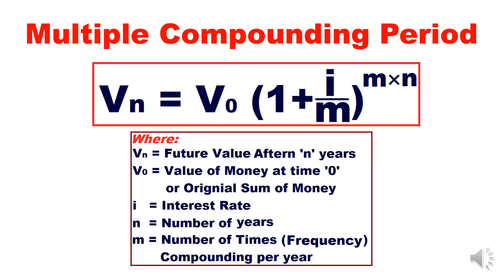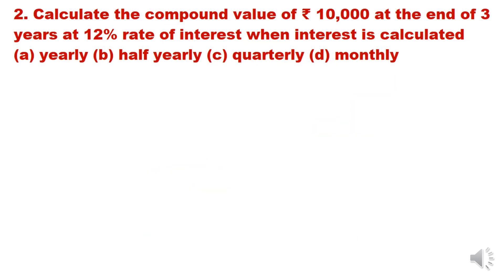Now the next concept: multiple compounding period concept. The formula is: Vn = V0 × (1 + i/m)^(m×n), where Vn is future value, V0 is the original value, i is interest rate, n is number of years, and m is the frequency of compounding per year. Unlike annual compounding, here compounding takes place multiple times a year — quarterly, half-yearly, monthly, etc.